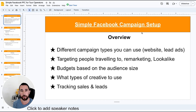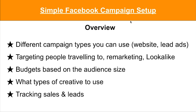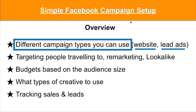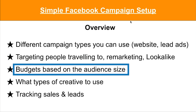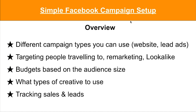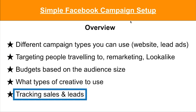Operators can do this themselves or hire us — it's pretty easy to understand and follow. I'm going to cover about eight or nine slides at a high level. The overview includes different campaign types you can use, which are website and lead ads generally speaking. We'll cover targeting — who you want to target, people traveling to your market, remarketing, maybe using lookalikes — as well as budgets based on audience size, which is something we get questions about all the time, and what types of creative to use, whether video or images.